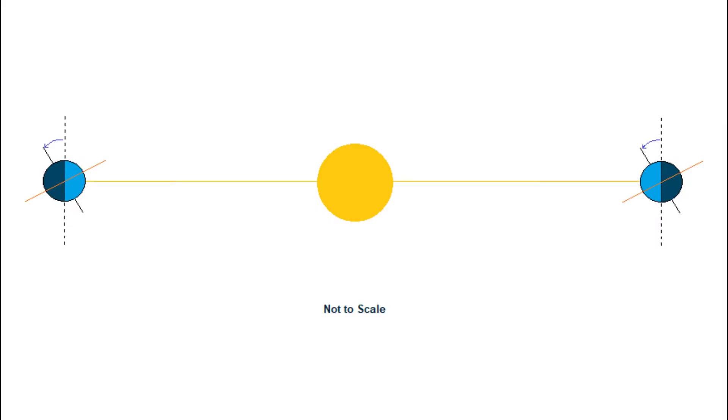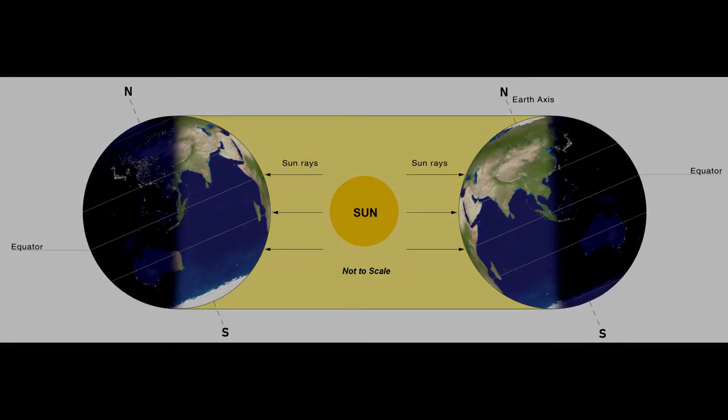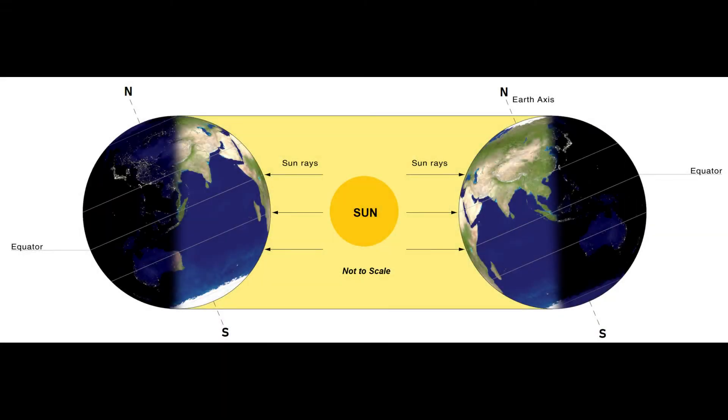These changes happen because the Earth's axis is tilted relative to the plane in which it orbits the Sun. For half the year, the direction towards the Sun is centered more on the northern part of the Earth, and for the other half of the year, it is the southern part that is oriented more directly towards the Sun.